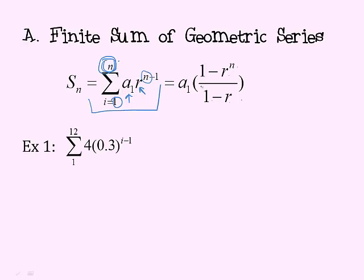So identify the parts from the problem. Then we plug them into this formula right here: a sub 1 times 1 minus r to the nth power over 1 minus r.